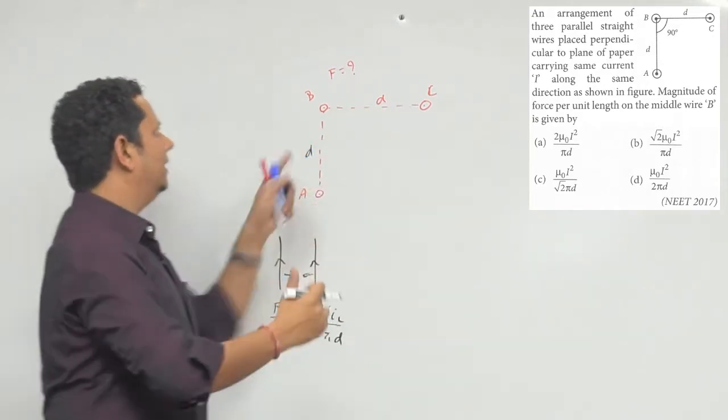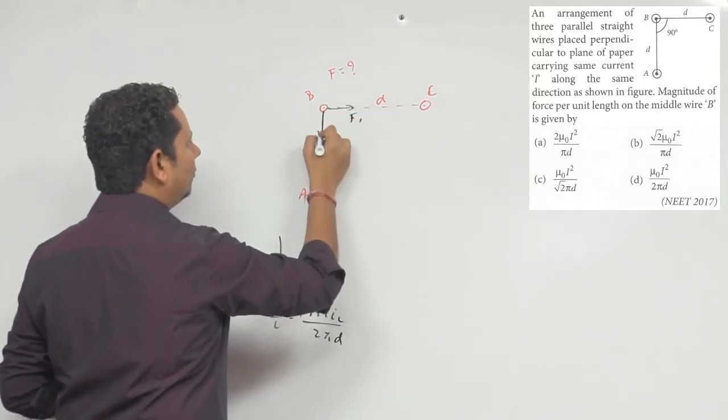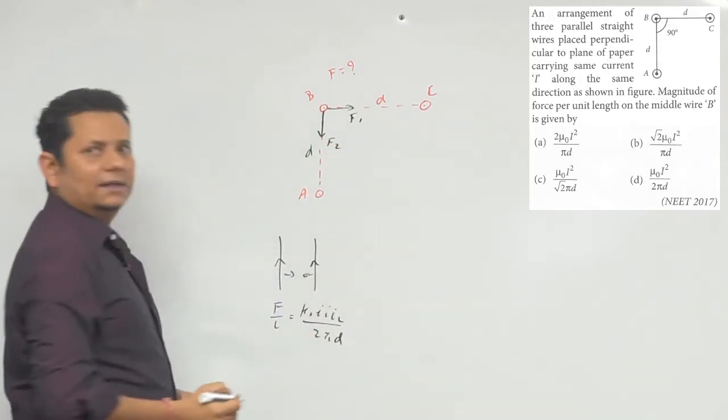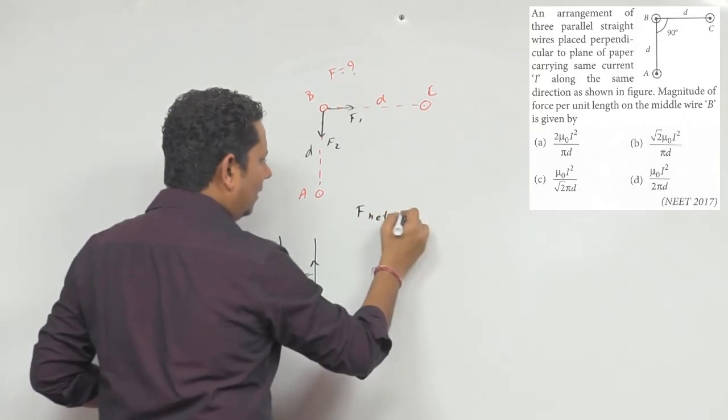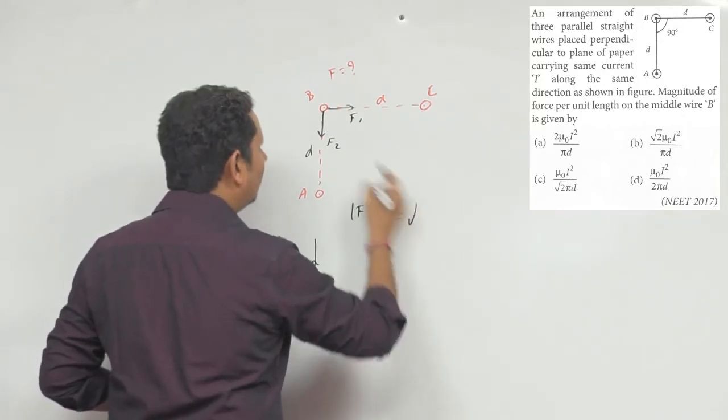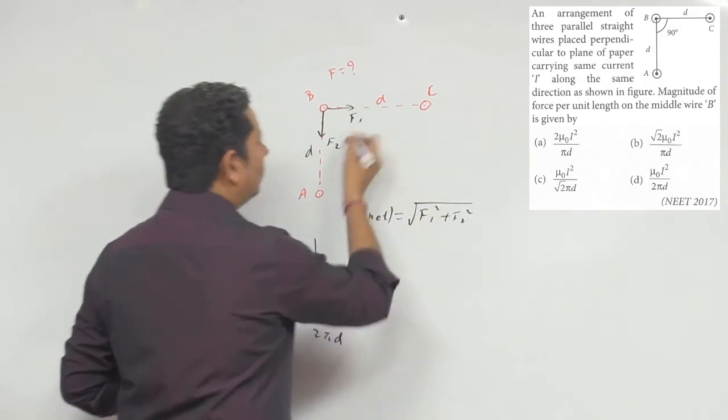Force is direction में जा रही है, its upward force in this direction, this we call f1 and force in this direction we call f2. Net force जो आएगा वो इन दोनों का resultant होएगा, so you can write f net का magnitude that will be equal to under root of f1 square plus f2 square because दोनों के बीच में 90 degree का angle होएगा.